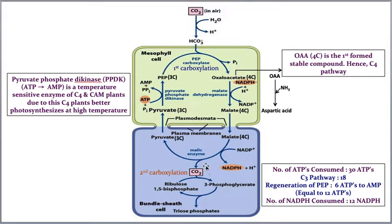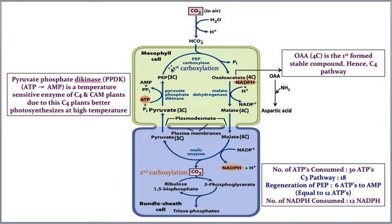The second carboxylation takes place in the bundle sheath, with RuBP as the acceptor. So in C4 pathway, there are two carboxylations: one in mesophyll with PEP, and one in bundle sheath with RuBP. After releasing CO2, malate becomes 3-carbon pyruvate, which returns to the mesophyll and uses ATP to regenerate PEP.